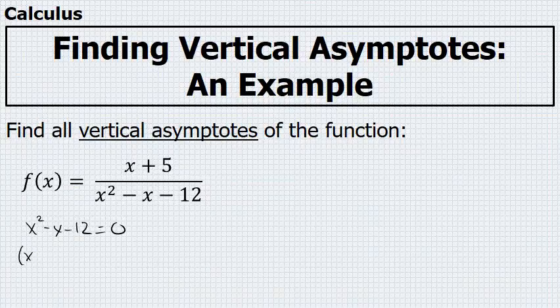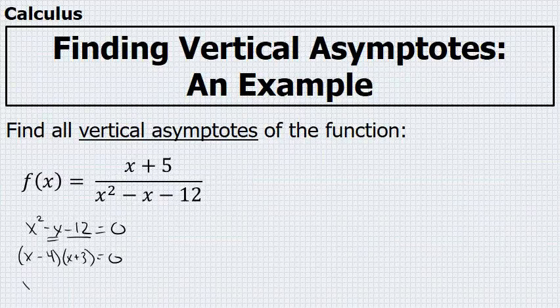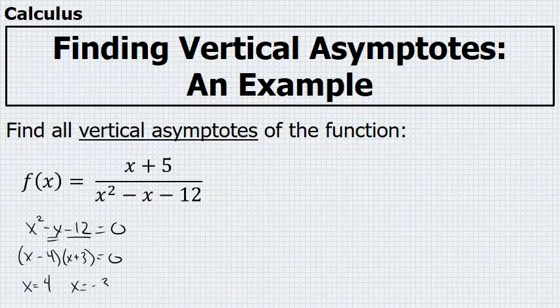Two numbers that have a product of negative 12 and a sum of negative 1 are negative 4 and positive 3, and this means that the two x values that would yield a zero in the denominator are x = 4 and x = -3.